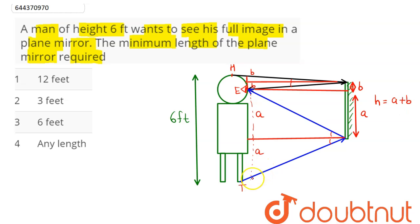And this here total height is A plus A plus B plus B, which is 6 feet, which is 2A plus 2B. Hence, A plus B here comes out to be 3 feet.